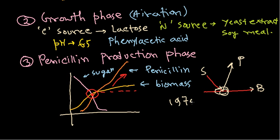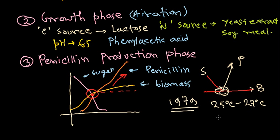This fermentation scheme was in use from around 1979. The penicillin production is carried out at a temperature of 25 to 27 degrees Celsius, which is where penicillin productivity is highest.